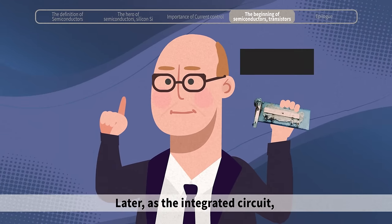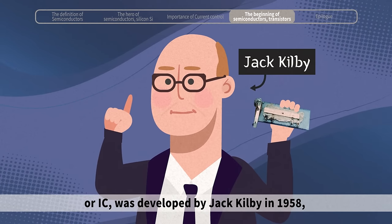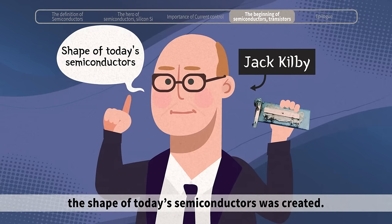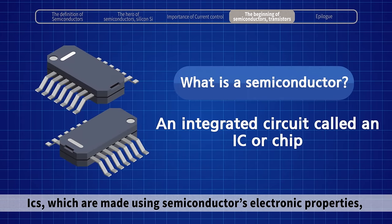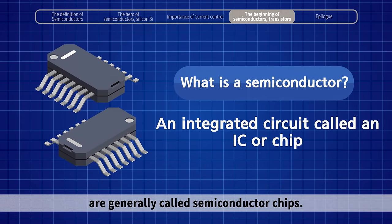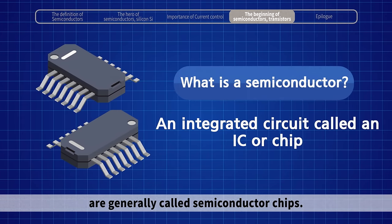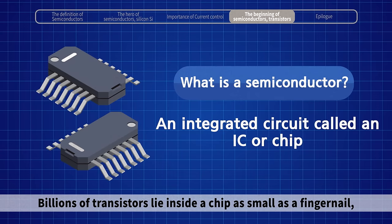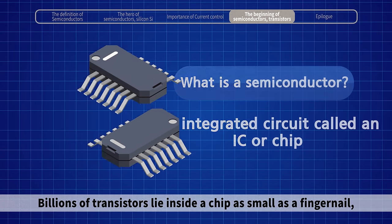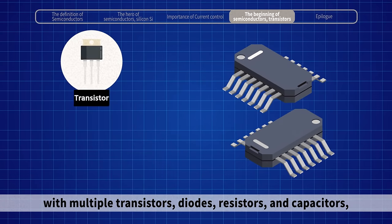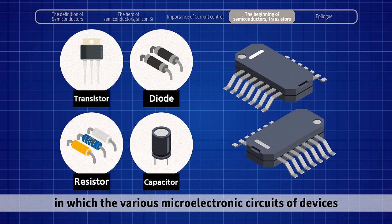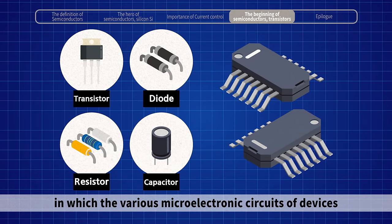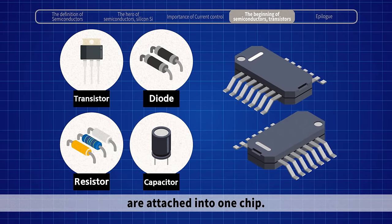Later, as the integrated circuit — or IC — was developed by Jack Kilby in 1958, the shape of today's semiconductors was created. ICs, which are made using semiconductors' electronic properties, are generally called semiconductor chips. Billions of transistors lie inside a chip as small as a fingernail, with multiple transistors, diodes, resistors, and capacitors, in which the various microelectronic circuits of devices are attached into one chip.